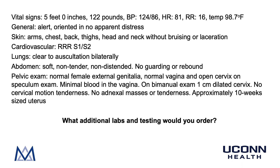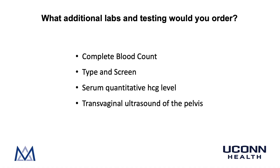What additional labs and testing would you order? The additional labs and testing include a complete blood count, a type and screen, a serum quantitative HCG level, and a transvaginal ultrasound of the pelvis. The purpose is to quantify her blood loss, determine if she's Rh negative — which would require a RhoGAM shot given that she is bleeding — and to correlate the serum HCG level with transvaginal ultrasound findings to determine if an intrauterine pregnancy should be visible. The purpose of the vaginal ultrasound is to determine viability and location of the pregnancy, and also to document the number of gestations.